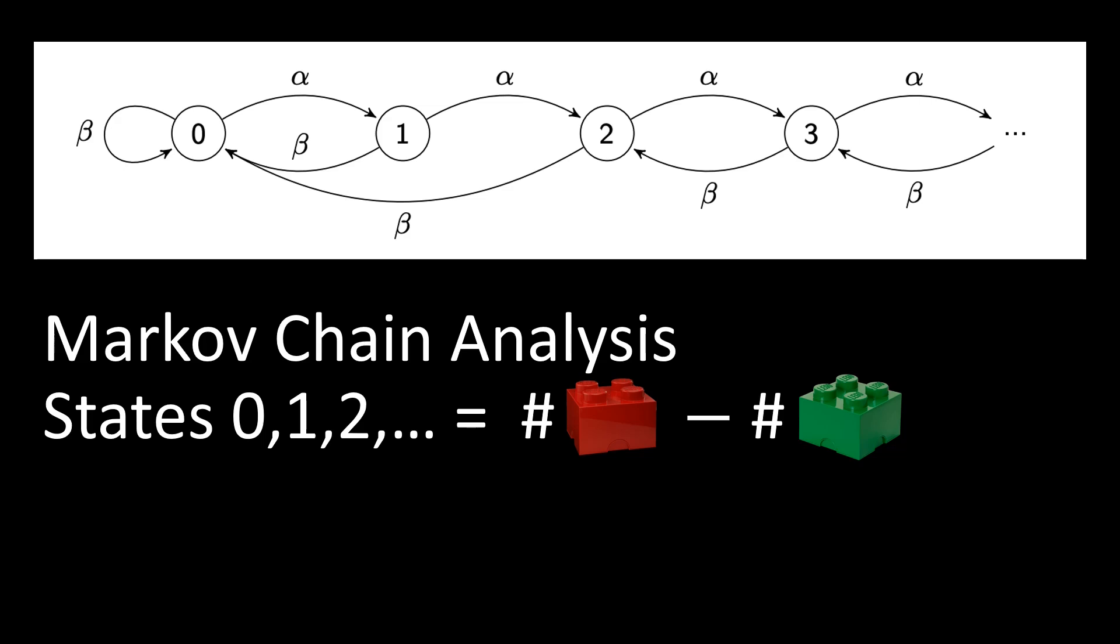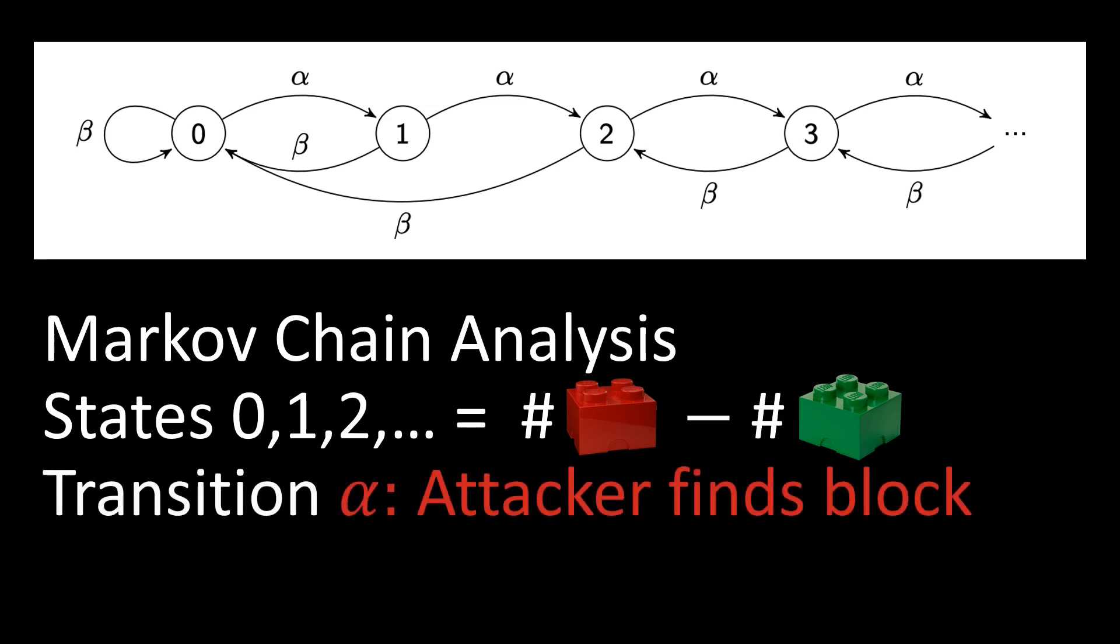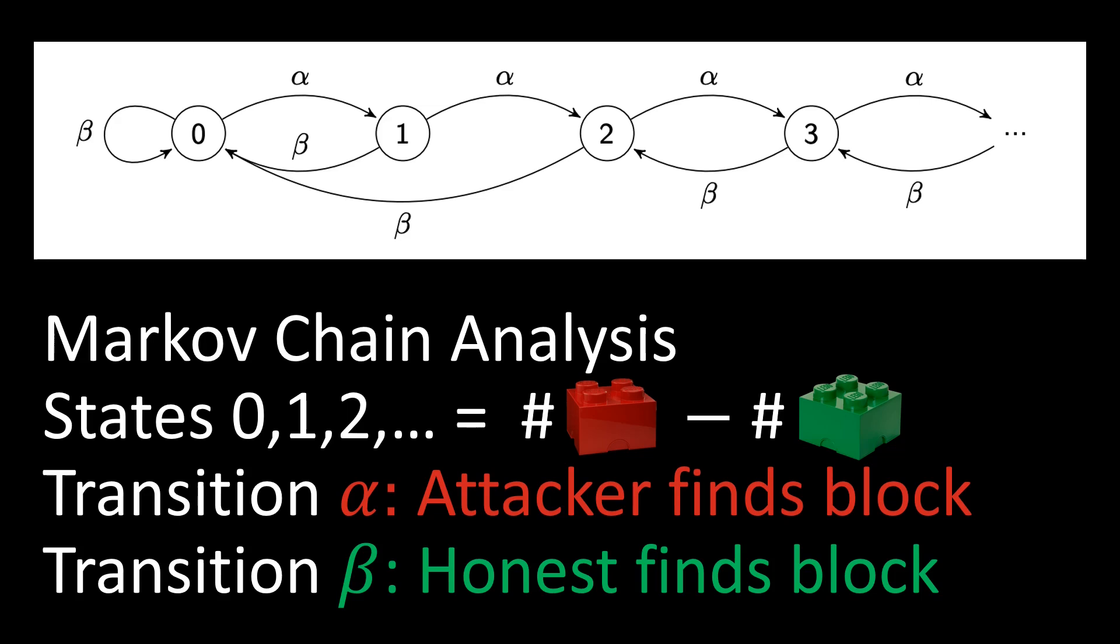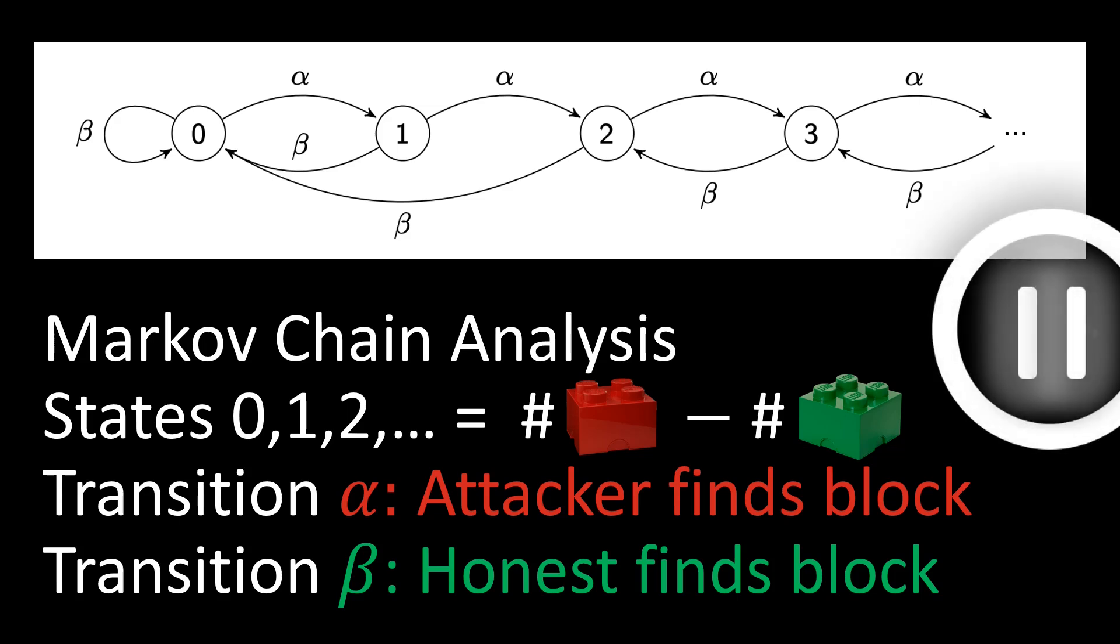In any state, two things can happen. Either the attacker finds a block, which we call a transition alpha, or the honest miners find a block, which is a transition beta. If we run a blockchain, we essentially jump around in this Markov chain. If you run the blockchain for a long time, which state is visited most often? Please pause the video and think about this.